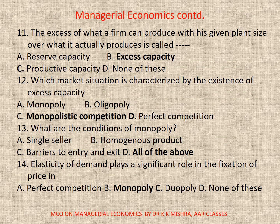11. The excess of what a firm can produce with its given plant size over what it actually produces is called: A. Reserve Capacity, B. Excess Capacity, C. Productive Capacity, D. None. Correct option is B. Excess Capacity.